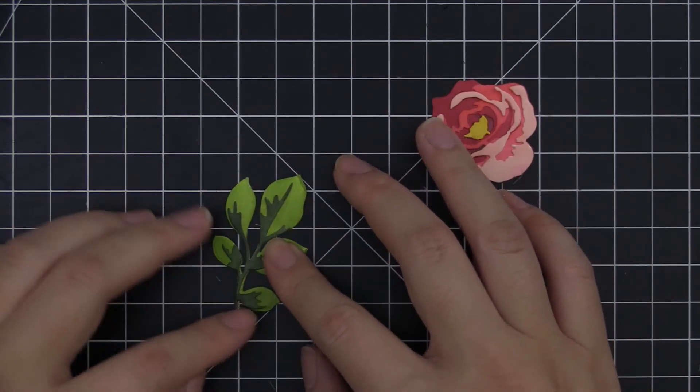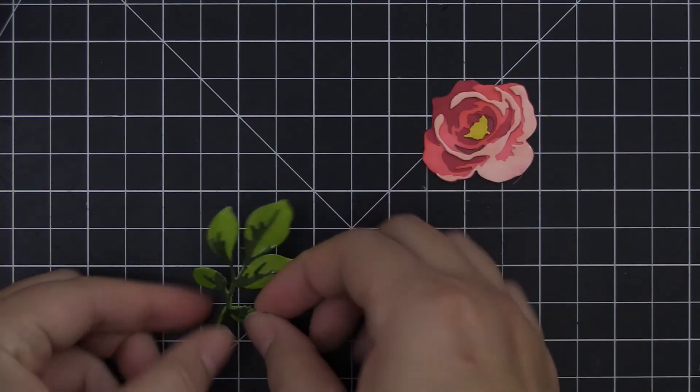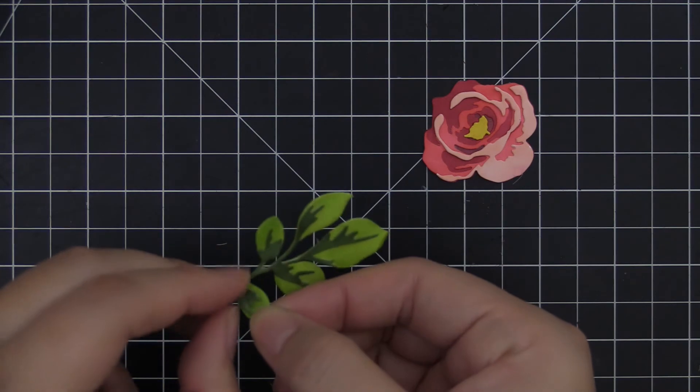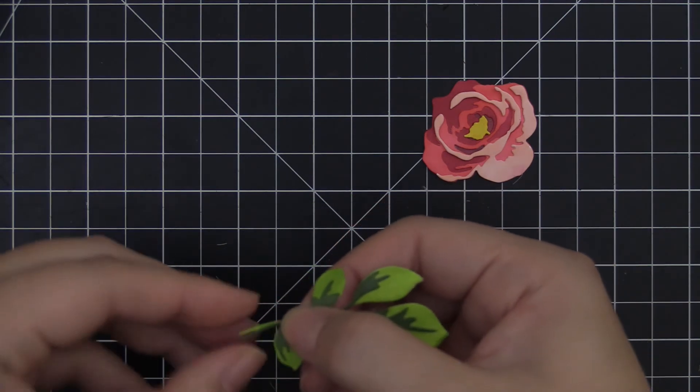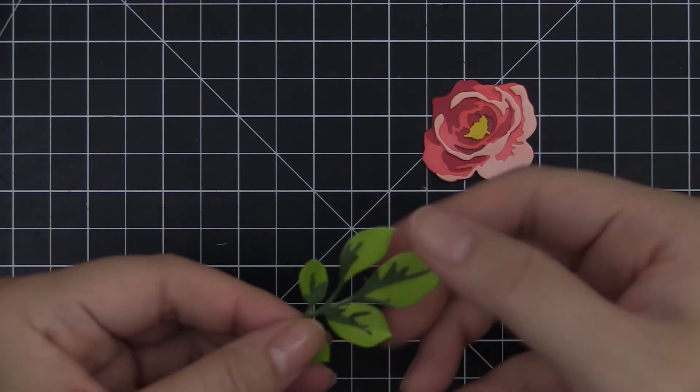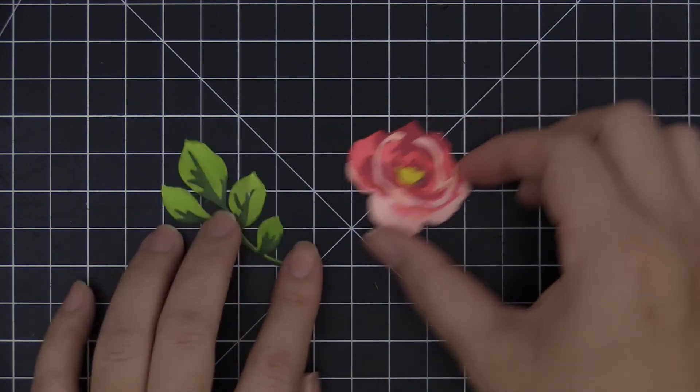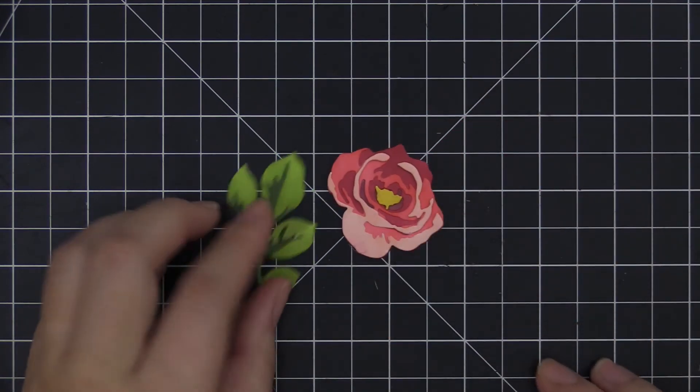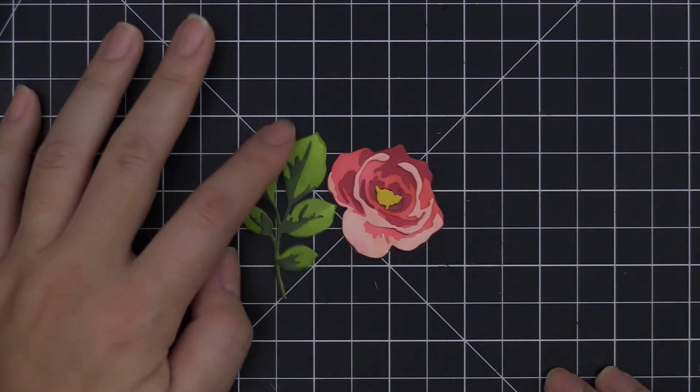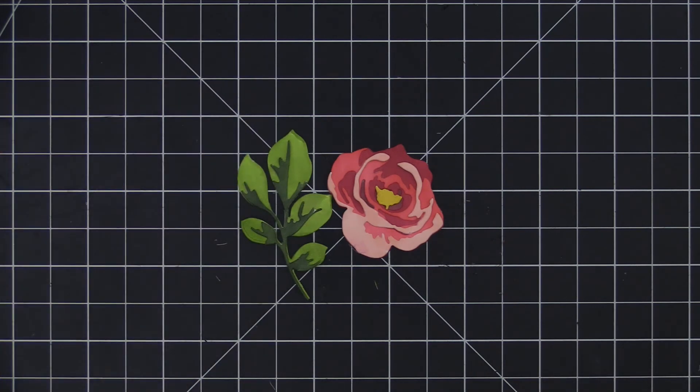So we're going to adhere these on top of each other. And then that's how you layer some of the images from the garden pics die set. These are very pretty and very detailed, but it's not as intimidating as you might think they are. So I hope this video was helpful.